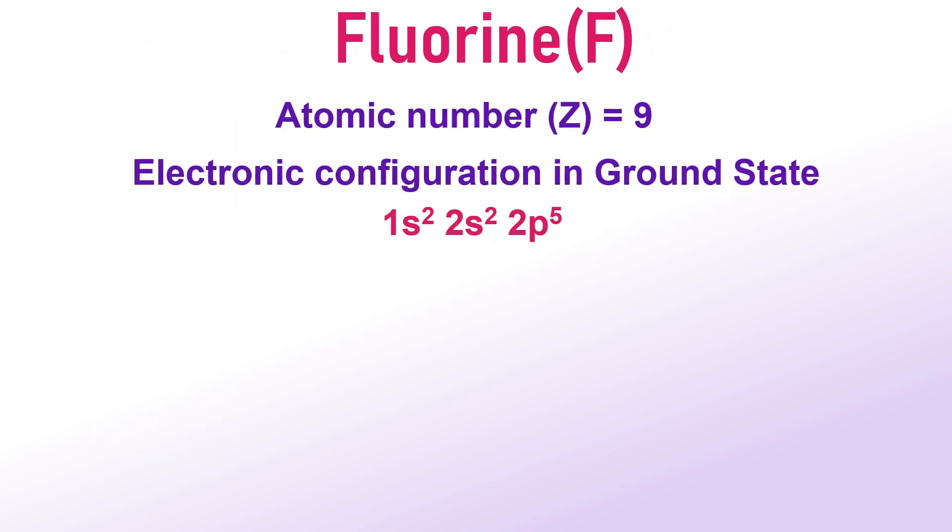The electronic configuration of fluorine is 1s2, 2s2, 2p5. There are 7 electrons in the outer shell with 1 unpaired electron. It contributes this unpaired electron for covalent bond formation. Thus, fluorine can form 1 covalent bond and its valency is 1.